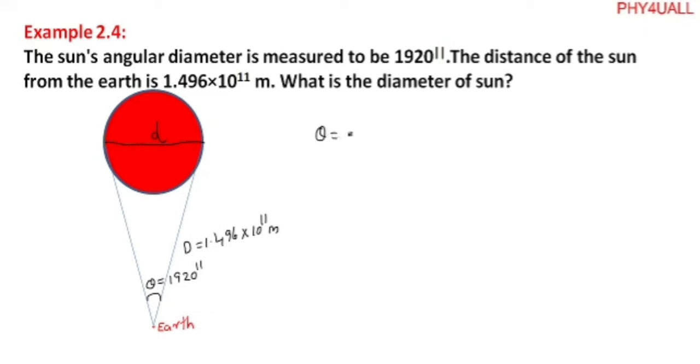Theta equals arc length divided by radius. So theta equals what? The arc length given here is d, the diameter of the sun. The radius is the capital letter D.